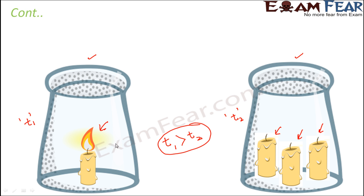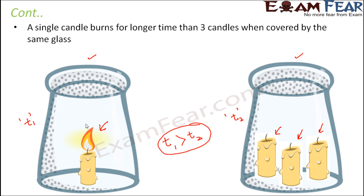Therefore each of them get only one third of the air which is present inside the glass. Therefore the candles go off faster than in case of the first scenario. So it is seen that a single candle burns for longer time than three candles when covered by the same glass. So all these experiments with candles and glass prove that combustion cannot take place without air, without oxygen.